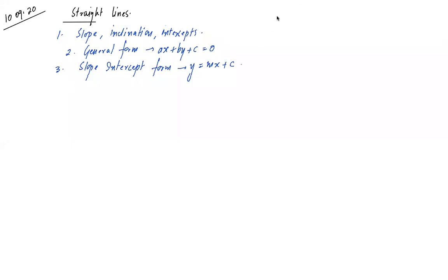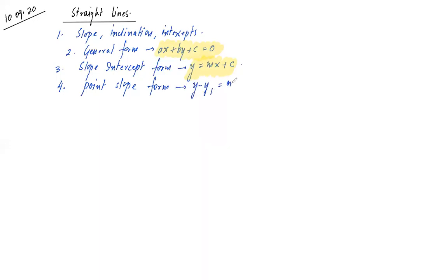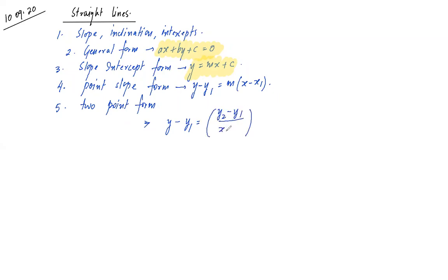In straight lines, the topics we have seen so far are: slope, inclination, intercepts, general form (ax + by + c = 0), slope-intercept form (y = mx + c) where only y is on the left-hand side, and point-slope form where we need a point and a slope: y minus y₁ equals slope multiplied by x minus x₁. In two-point form we require two points, substituting slope as (y₂ - y₁)/(x₂ - x₁).